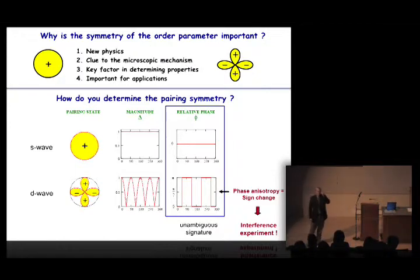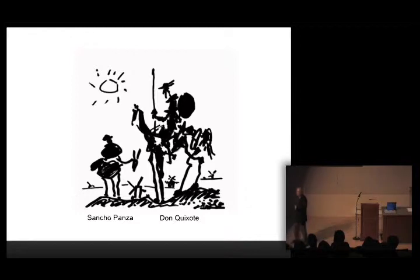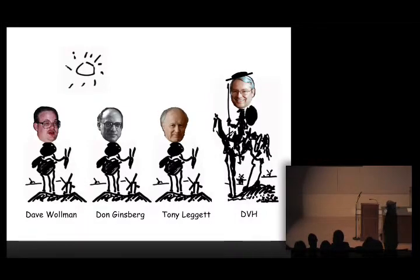So this, in a way, is where my part of the story really starts. And I did not do this alone. So just like Don Quixote had his sidekick, Sancho Panza, I had my own Sancho Panzas. I had three of them. So Tony Leggett, Don Ginsberg, and David Woolman. And they went with me on this very exciting journey to try to figure out the symmetry of the order parameter and the high-temperature superconductors.